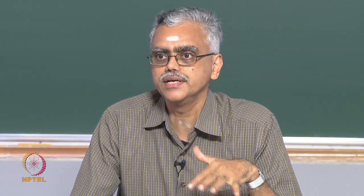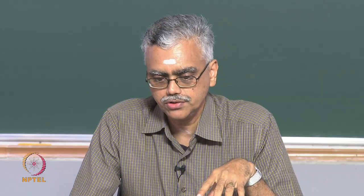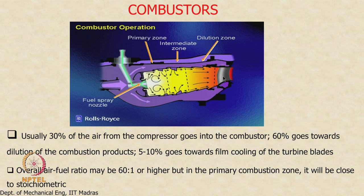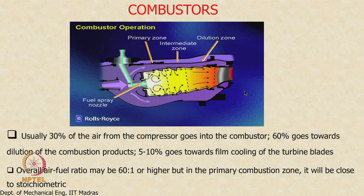The dilution zone is where extra air is added to reduce the temperature of the combustion gases leaving the combustor. Unlike in an IC engine, the combustion gas temperatures here can be very high. We add air to dilute the combustion products so they are at an acceptable temperature when they enter the high pressure turbine. The guide vanes seen on the combustor before the gases enter the turbine are shown in this cross-sectional view.